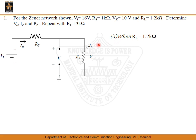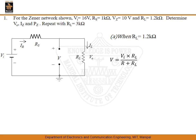Both the input voltage and the load resistance are going to affect the voltage across the Zener. So we remove the Zener diode from its position and calculate the voltage across its two terminals. Applying KVL, we get an expression for V, which is the voltage across the load resistance RL. So V equals VIN multiplied by RL divided by the total resistance R plus RL.